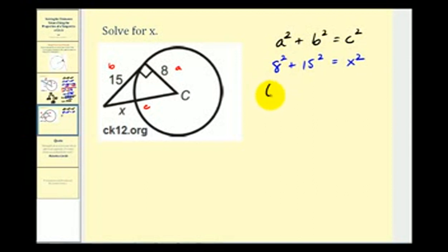Well, 8 squared is equal to 64. 15 squared is equal to 225. So we have 64 plus 225 equals 289.